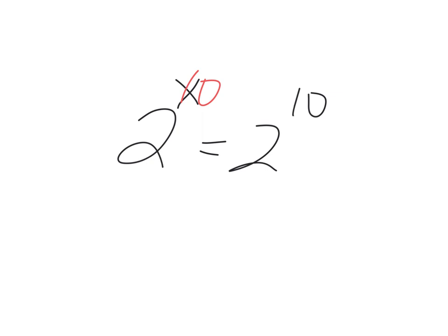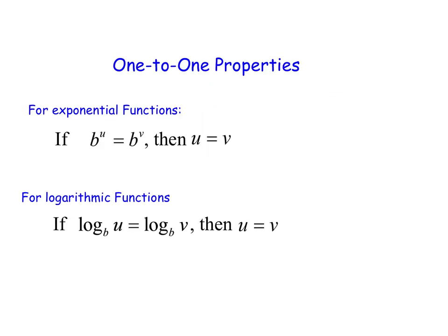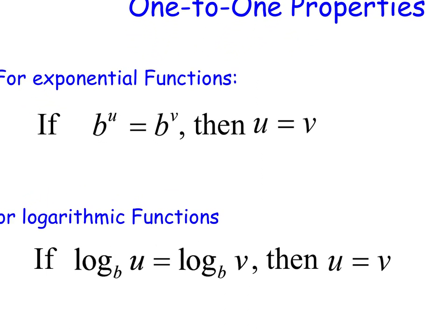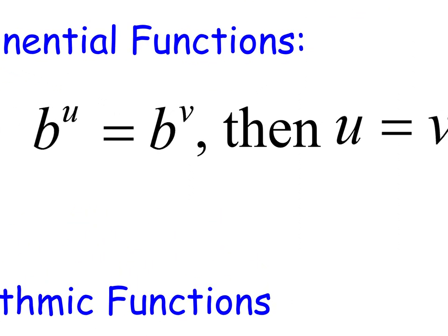That doesn't just happen automatically for people. They're like, wait a minute, why is it? Oh, I guess 2 to the 10th is 2 to the 10th. We actually have an official thing in math — it's on page 2 of the notes. For exponential functions, where x is the exponent: if b to the u equals b to the v, then u equals v. If the bases are the same, the answer's already there.